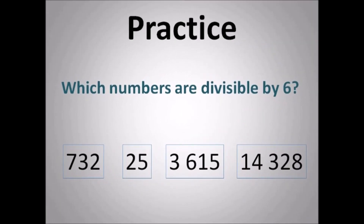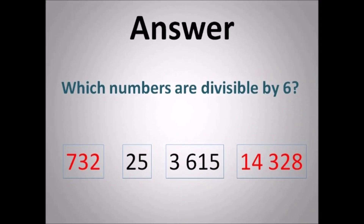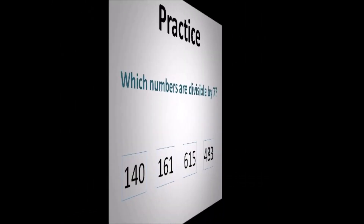Which numbers are divisible by 6? You have 732, 25, 3615, and 14,328. Work it out — remember the rule. The numbers must be divisible by 2 and 3. So right away, it has to have an even number at the back. That gives us 732 and 14,328. And then they must add to give you a multiple of 3 for divisibility by 3. So those are the answers.